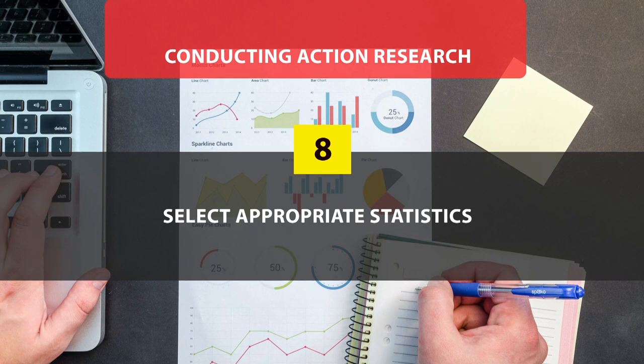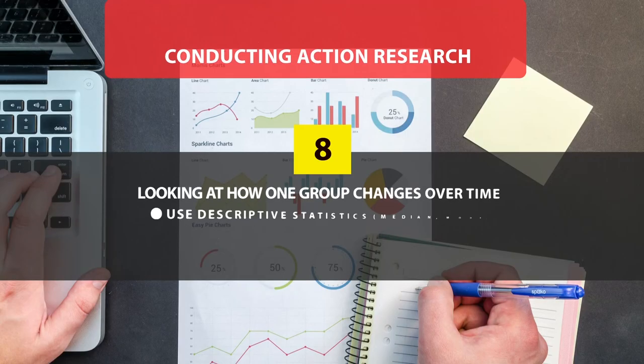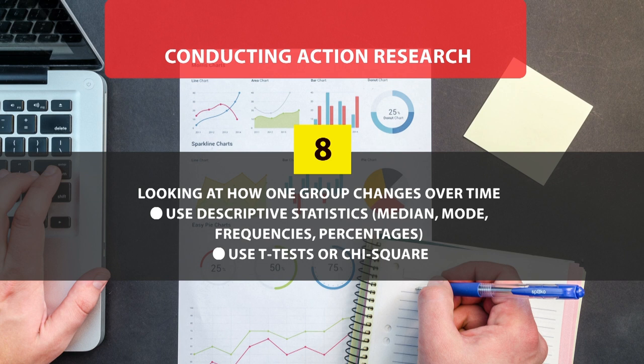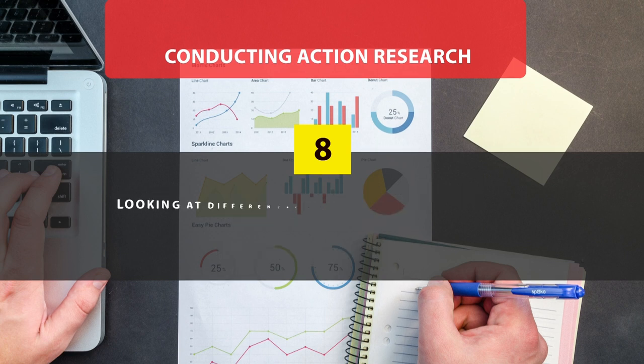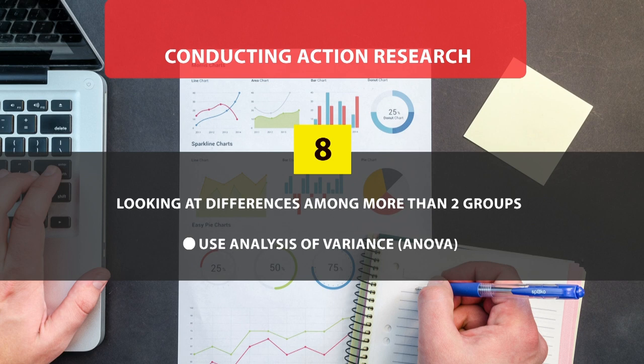When you select the sample, you also decide what statistics will be appropriate to analyze your data. When you design your tool, you already know what kind of data you will get. If you require only descriptive statistics you can use median, mode, frequency, or percentage. If you are comparing two or more groups you can use t-test, chi-square, or ANOVA. If looking at differences between a control group and an intervention group, use t-test or chi-square; for more than two groups, use analysis of variance (ANOVA). This statistical plan is always part of your action research proposal.